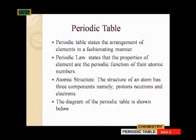The periodic table states the arrangement of elements in a fascinating manner. Periodic law states that the properties of elements are the periodic function of their atomic numbers. What this simply means is that the properties of elements are dependent on the atomic numbers, which allows us to classify elements into groups and periods.